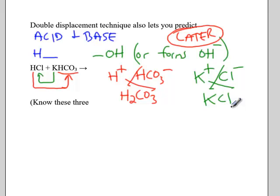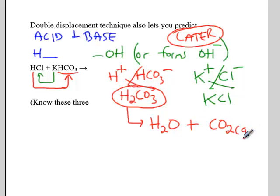Now it turns out carbonic acid is not stable in water. It's going to break down. It doesn't dissociate into cations and anions, but it breaks down because it forms a gas. Carbonic acid turns into water and carbon dioxide. We know carbon dioxide is a gas and water is a liquid.